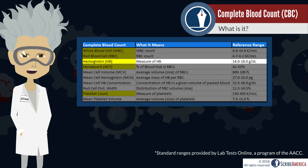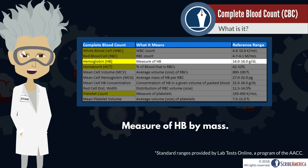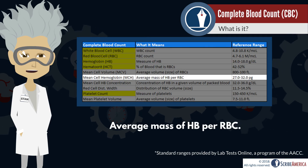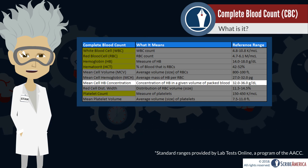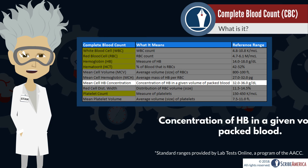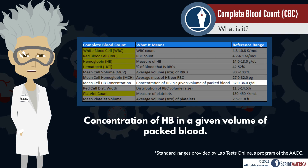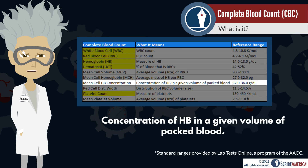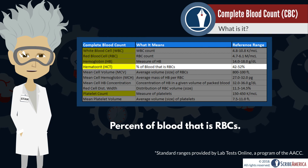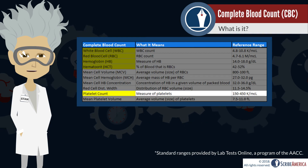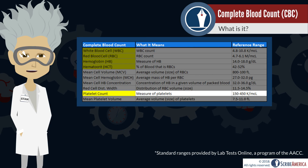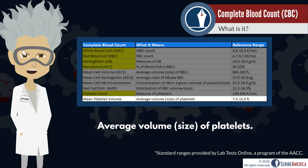Hemoglobin is the protein in red blood cells that carries oxygen. Since hemoglobin is a protein within a cell, it's measured by mass. Mean cell hemoglobin is the average mass of hemoglobin per red blood cell. Clinicians also look at the concentration of hemoglobin in any given volume of packed blood — mean cell hemoglobin concentration is calculated by dividing hemoglobin by hematocrit. Hematocrit is the percent of the blood that is red blood cells. Finally, platelet count is the number of platelets circulating in the blood, and mean platelet volume tells you the average volume or size of the platelets.